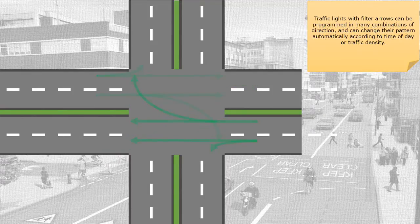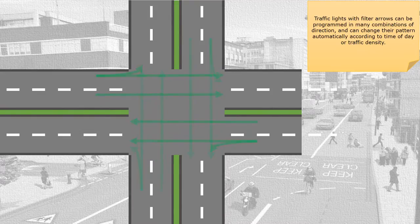Traffic lights with filter arrows can be programmed in many combinations of direction and can change their pattern automatically, according to time of day or traffic density.